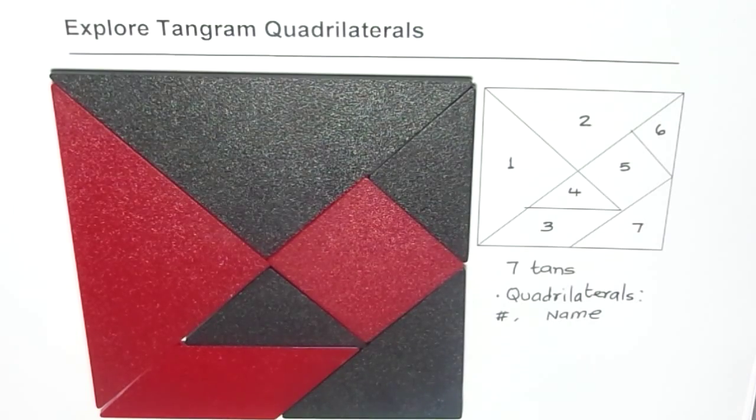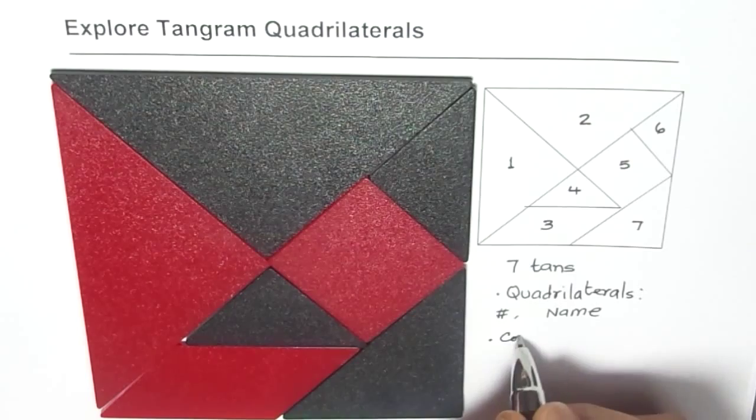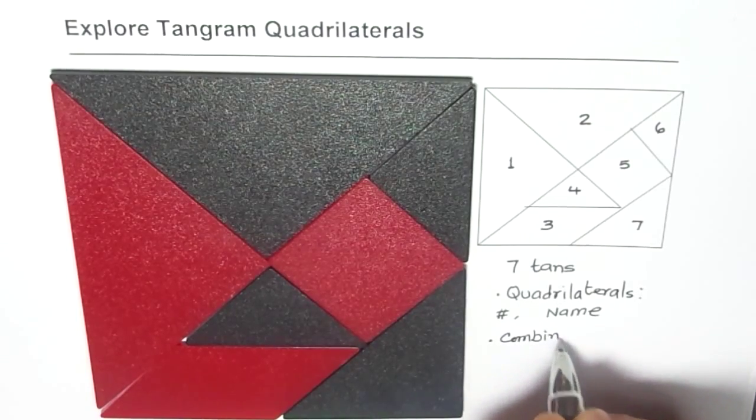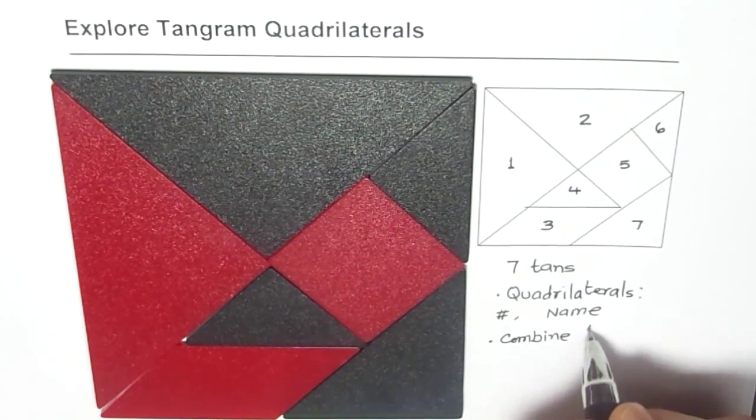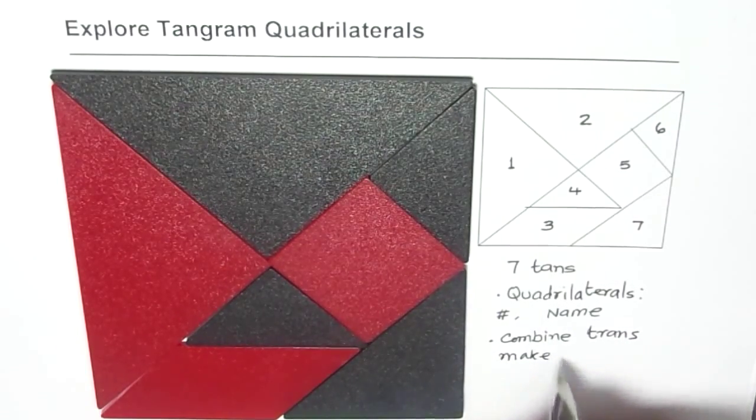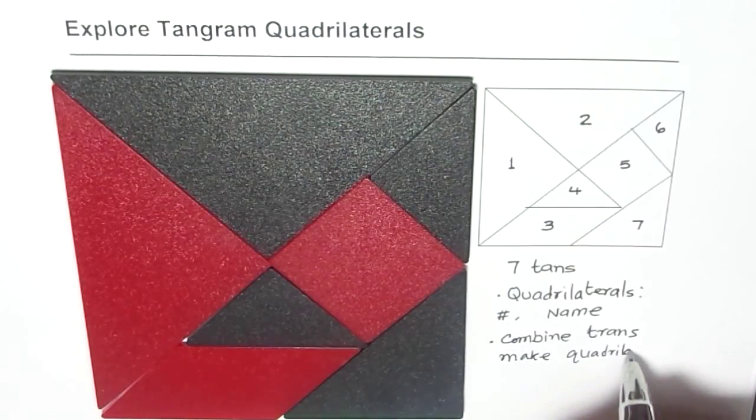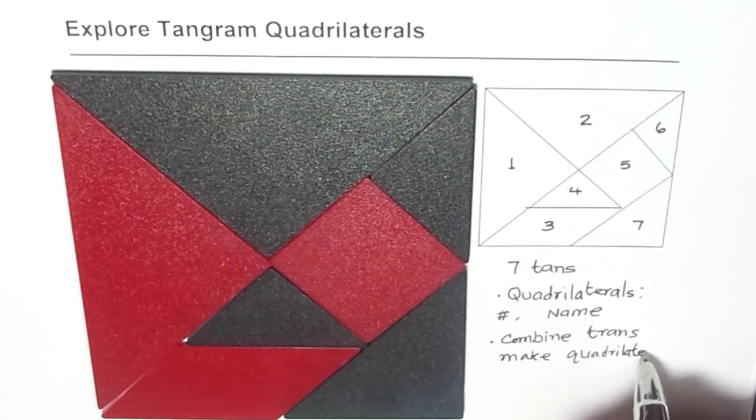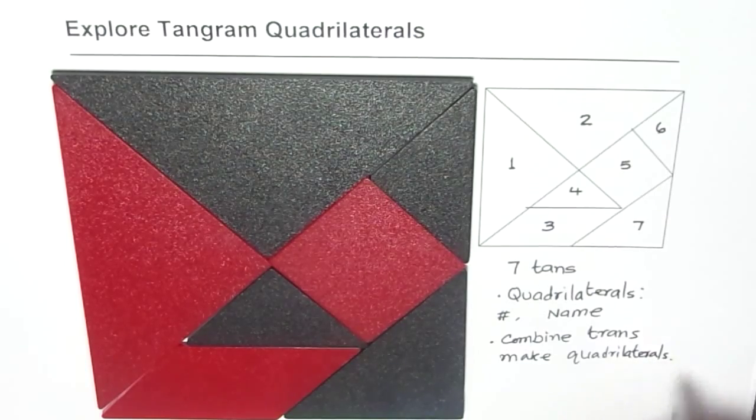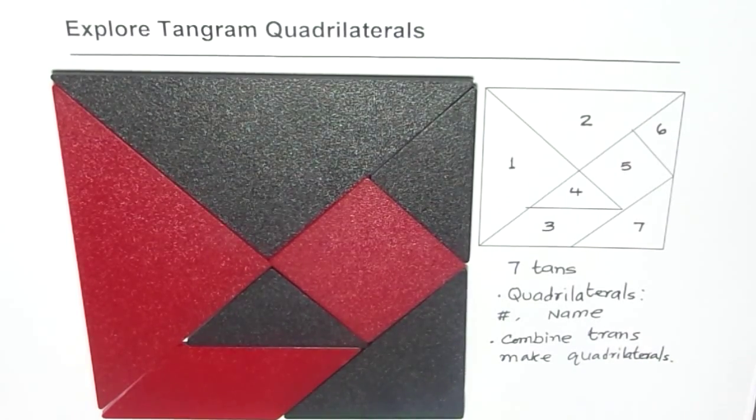Now what you should think about is how can you combine different tans and make quadrilaterals? So that is an exercise for you, right? Can you combine some of them so that you can make more quadrilaterals? Think about it.